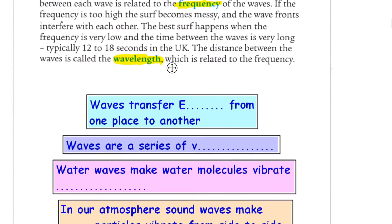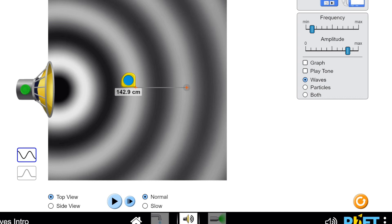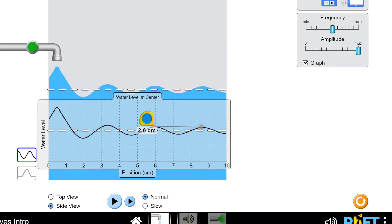Waves transfer something from one place to another — the word I used a few moments ago is energy. That's important to remember: waves transfer energy from one place to another. When you were looking at the screen, it was going from left to right — that was a transfer of energy. Waves are a series of vibrations or oscillations — they go back and forth. Water waves make water molecules vibrate. The water molecules are vibrating up and down, whereas the wave direction is going from left to right as you're looking at it.